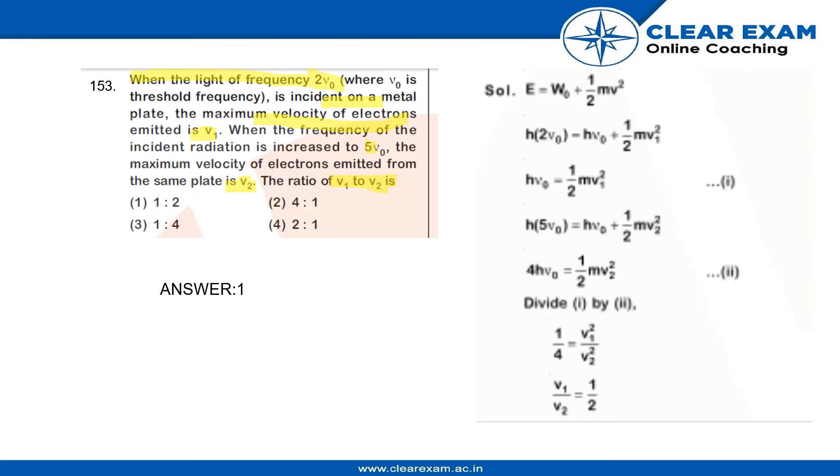Now coming to the solution, we know that energy equals W0 plus half mv square. This W0 is the work function, so it will be equal to h into μ0, which is the threshold frequency. So work function is h into threshold frequency.